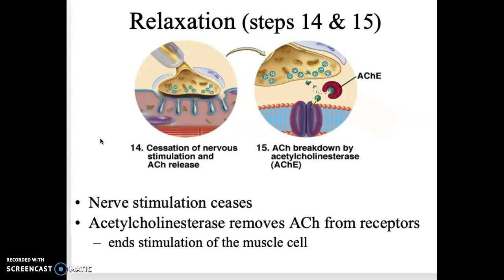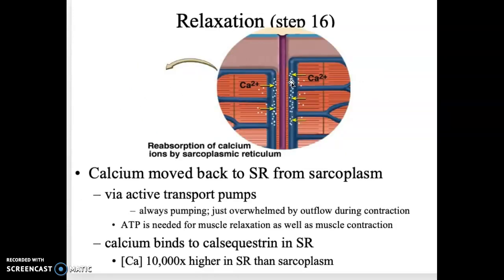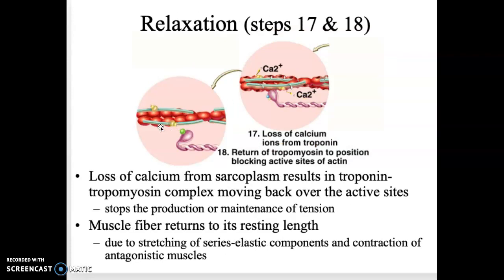Last up is relaxation. First, the nervous signal needs to stop. Acetylcholine will stop being released, and then the enzyme acetylcholinesterase will degrade any remaining acetylcholine, stopping any potentials from happening along the plasma membrane. Calcium then gets pumped back into the sarcoplasmic reticulum via small pumps. When an action potential tells the calcium to be released, that signal is way more powerful than the tiny pumps. Once calcium is pumped back in, troponin shifts the tropomyosin back over the active sites, and actin and myosin can no longer bind — returning the muscle to its resting length.